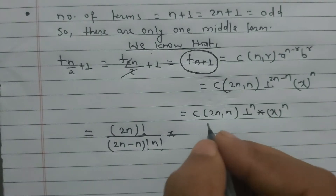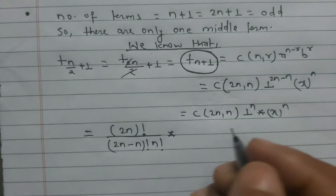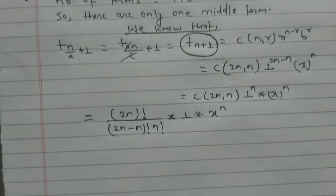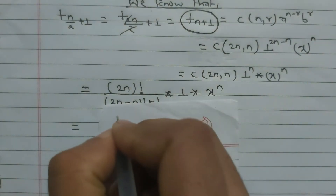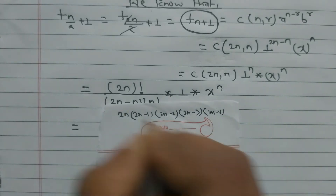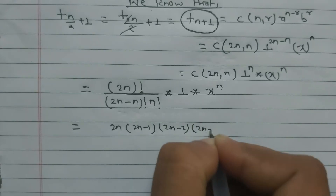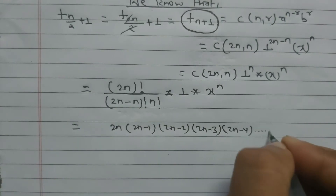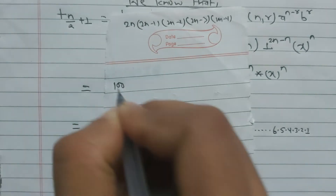Since 1^n = 1, we write: [(2n)! / (n!·n!)]·x^n. Now expanding (2n)!: it equals 2n·(2n−1)·(2n−2)·(2n−3)·(2n−4)·...·6·5·4·3·2·1.